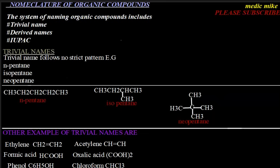Back to our topic: today we're talking about the systems of naming organic compounds. This system includes our trivial name, our derived name, and our IUPAC name. Our major focus today will be on the IUPAC system.